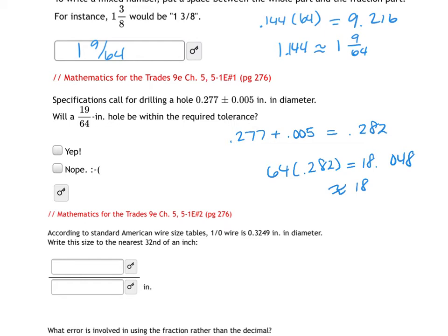So that's approximately equal to 18. 18 is closer to 18 than it is 19. So I know that if I have a hole that's required to be 0.277 with a tolerance of 0.005 on either side, plus or minus 0.005, that if I drill a hole that is 19/64ths, it will not be within the tolerances. However, so the answer is no. However, 18/64ths would be within the tolerance.